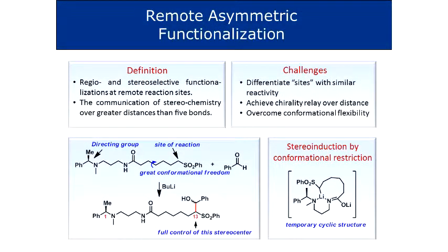In remote asymmetric functionalization, you add a different layer of complexity because not only do you have to achieve regio-selective or chemo-selective functionalization, you also have to introduce stereoselectivity. You have to be able to relay or communicate stereochemistry over a longer distance than we normally see. The challenge is that the longer the distance between your stereocenter and the site of reaction, the more degrees of freedom your molecule will have.